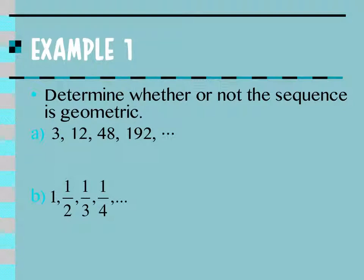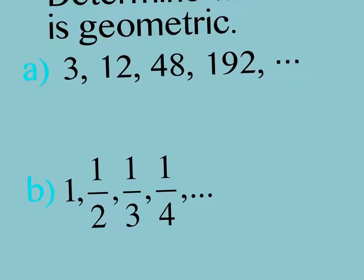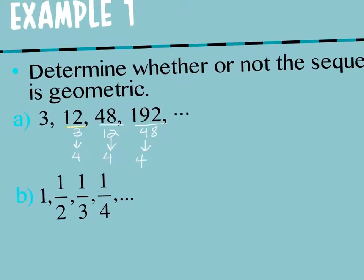So same type of examples as from 8.2. It says determine whether or not the sequence is geometric. So you're going to get a series. This time I have four numbers. And I want to check to make sure that when I divide 12 by 3, I'd get the same thing as if I divide 48 by 12 and 192 by 48. So 12 over 3, 48 over 12, and 192 over 48. What's 12 divided by 3? 4. What's 48 divided by 12? 4. 192 divided by 48? 4. So because these are all the same, this is geometric. And R, which is your common ratio, is 4.